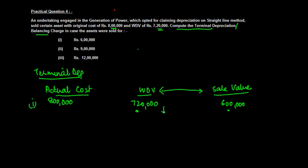This depreciation is known as terminal depreciation—terminal means towards the end. The difference between the written down value and the sale consideration, if the sale consideration is less than the written down value, then this difference is allowed as terminal depreciation. So 7 lakh 20,000 minus 6 lakh, which is 1 lakh 20,000, will be the terminal depreciation. In case 2, your actual cost is again 8 lakh.